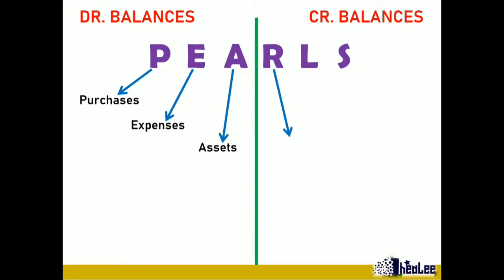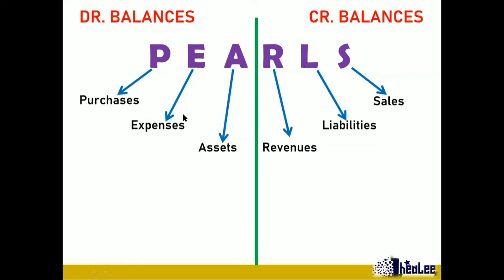Now let's take a look at our credit balances from PEARLS — R-L-S. R stands for revenues, L stands for liabilities, while S is sales. So you're presented with six items: the word PEARLS divided into two. P is for purchases, E expenses, A assets, R revenues, L liabilities, and S sales.